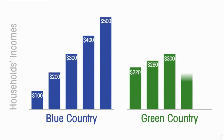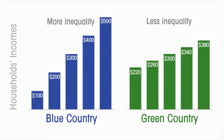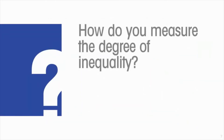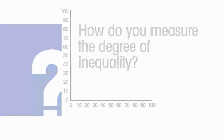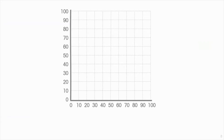Here's an illustration. We have two countries, each with five households. We can look at the incomes of those households and see that the distribution of income in one country is more unequal — there's greater variation — than in the other. But in an actual country with hundreds of thousands or millions of households, we can't always eyeball a histogram. So the question is: how do we actually measure the degree of inequality in an economy?